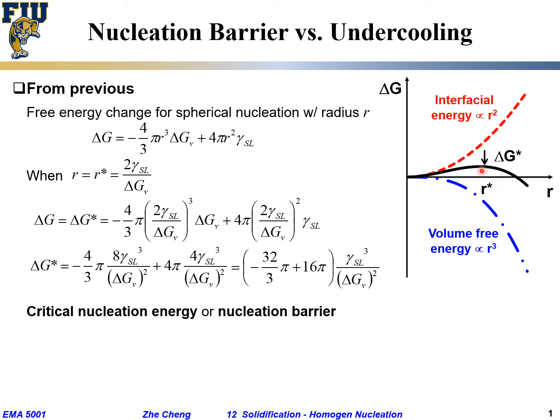This gives us the so-called critical nucleation energy, also called nucleation barrier, which is how high this number is. It would be 16 times 3 that's 48 minus 32, that's 16 over 3 π times this term. If we recall the ΔGv term is L ΔT over Tm, we plug this one back in.